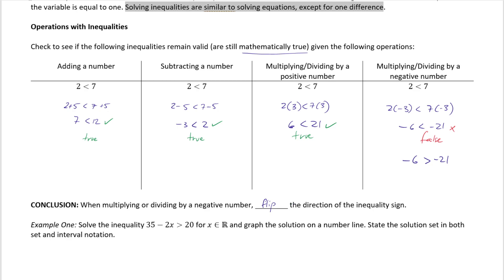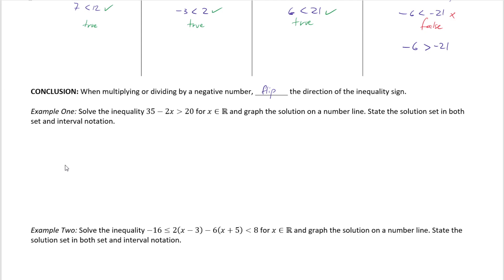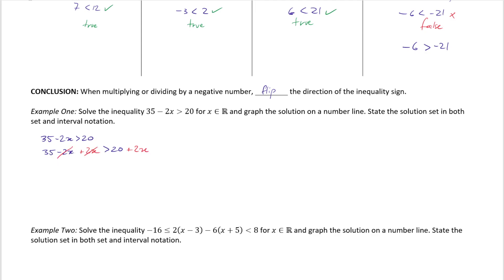So the conclusion is: flip the direction of the inequality sign when you multiply or divide by a negative number. Let's solve an inequality: 35 − 2x > 20, where x is an element of all real numbers. We want to find values of x that satisfy this inequality and state the answer in both interval and set notation, then graph it on a number line. One approach: add 2x to both sides.